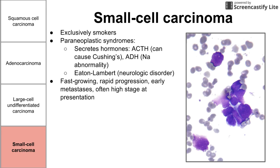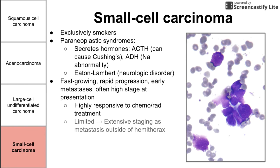Small cell carcinoma is faster growing than the non-small cell varieties. There is rapid progression, there are early metastases, and when it presents in the clinic, it's usually at a higher stage than the previous three carcinomas — this is an aggressive disease. On the other hand, it is also highly responsive to chemo and radiation treatment. There are two stages for small cell carcinoma: limited and extensive. You go from limited to extensive stage based on spreading outside of the hemithorax.